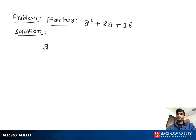Factor a² + 8a + 16. If we look at the first and last terms, it looks like a perfect square. We can write the first term as a² and the last term as 4².